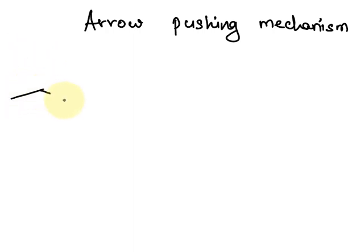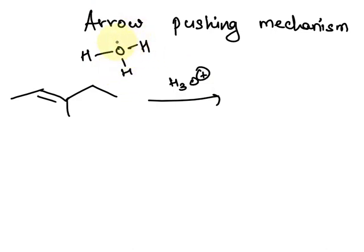So here we are given a molecule having double bond like this. It reacts with H3O+. So here we have hydrogen, oxygen, hydrogen and oxygen is having a positive charge over here.